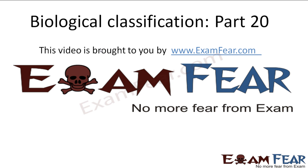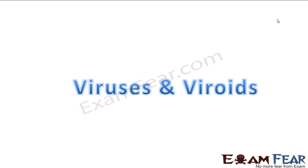Hello friends, this video on biological classification part 20 is brought to you by examfeo.com. Now let us come to the portion we are going to talk about - organisms which have not been included in any of the kingdoms in five kingdom classification. You can see those organisms on screen: that is viruses and viroids.